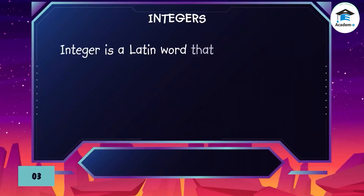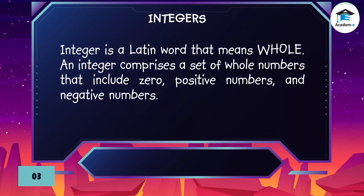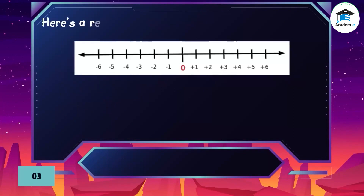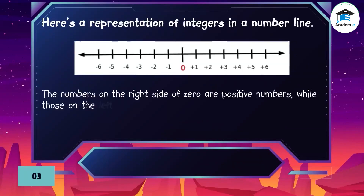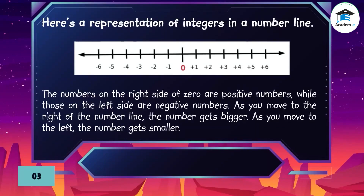Integers. 'Integer' is a Latin word that means whole. An integer comprises a set of whole numbers that include zero, positive numbers, and negative numbers. Here is a representation of integers on a number line. The numbers on the right side of zero are positive numbers, while those on the left side are negative numbers. As you move to the right of the number line, the number gets bigger.